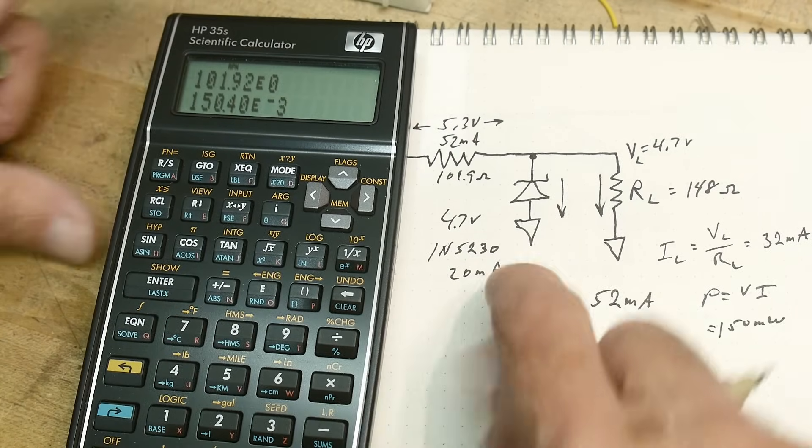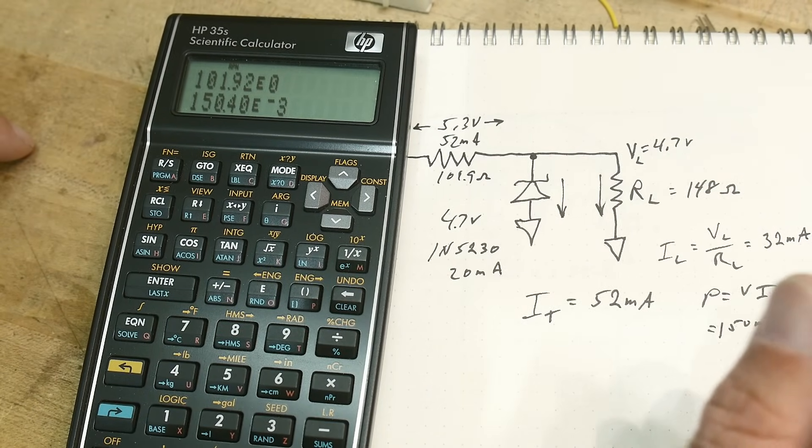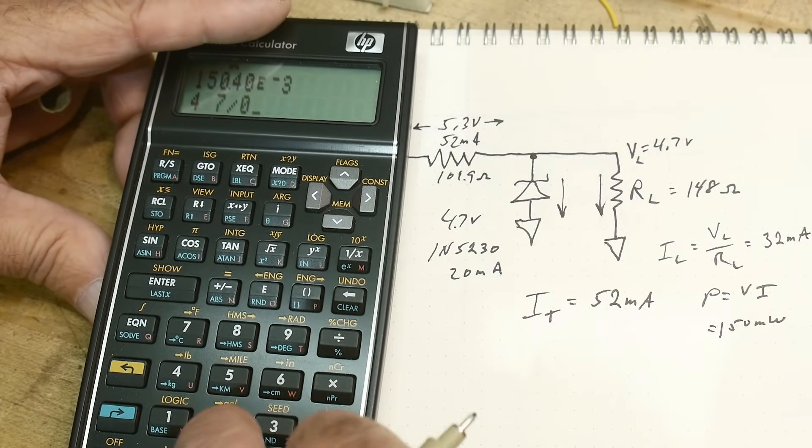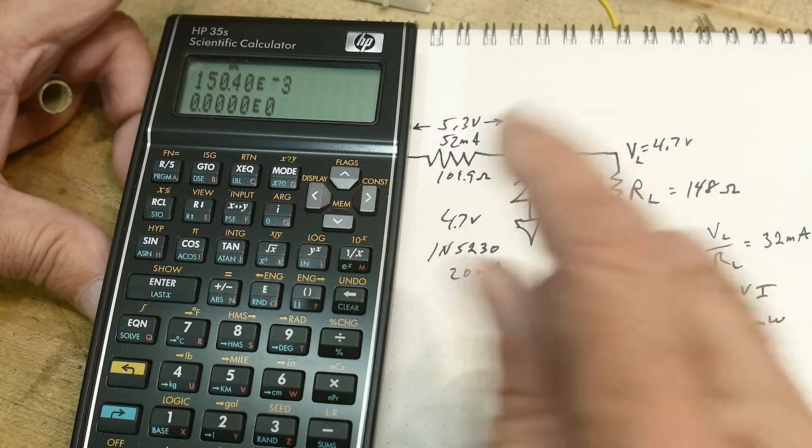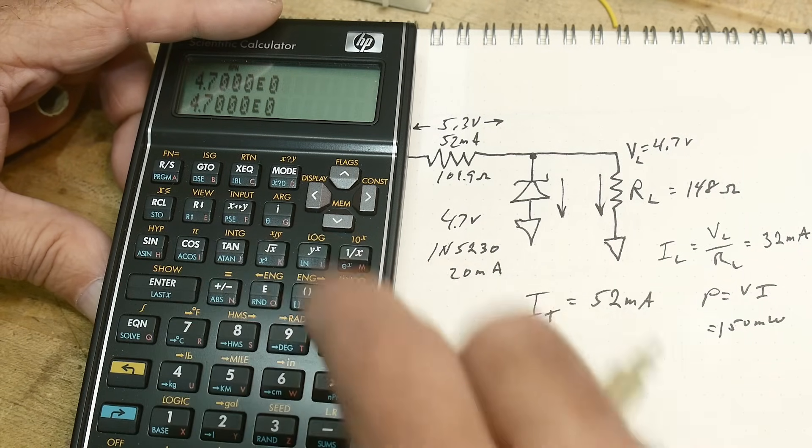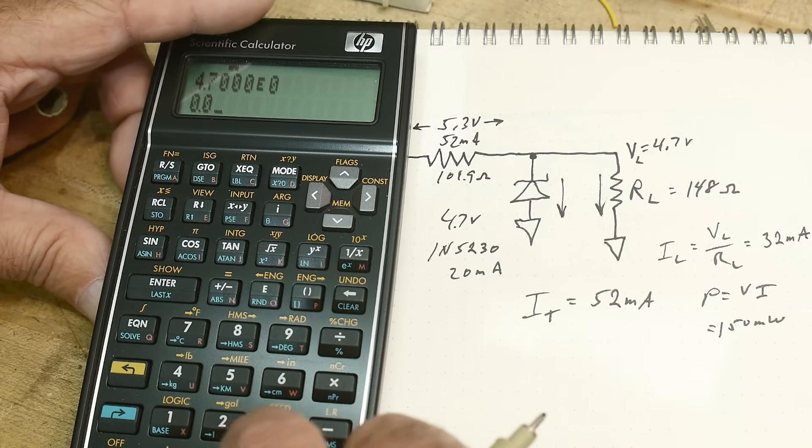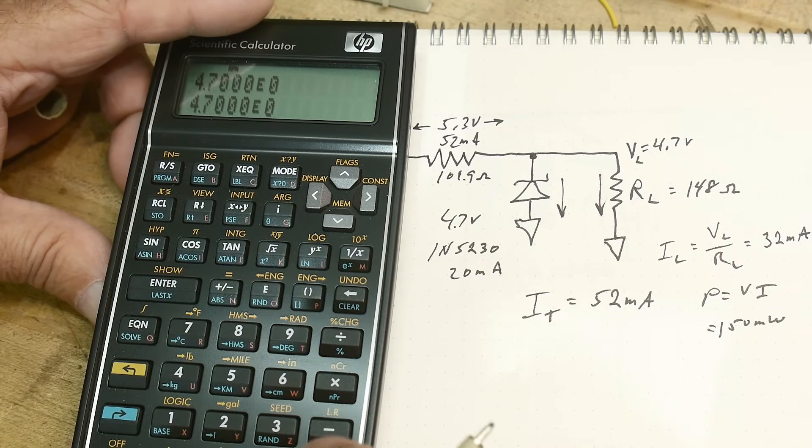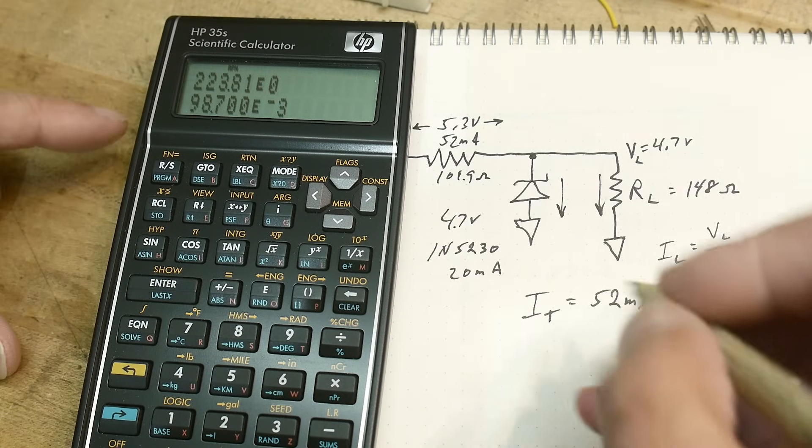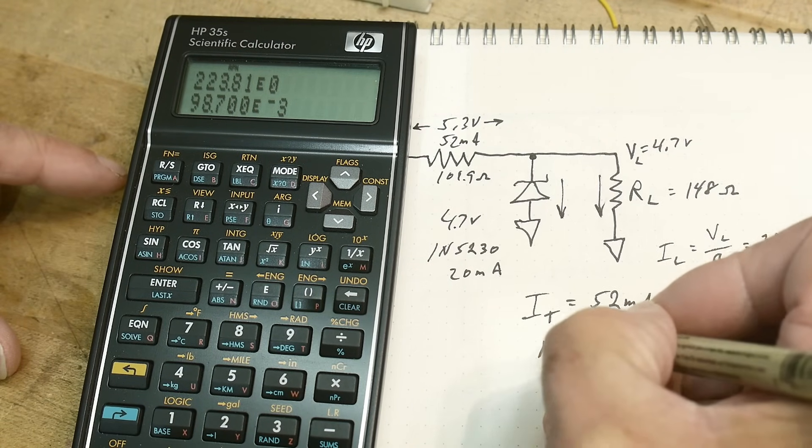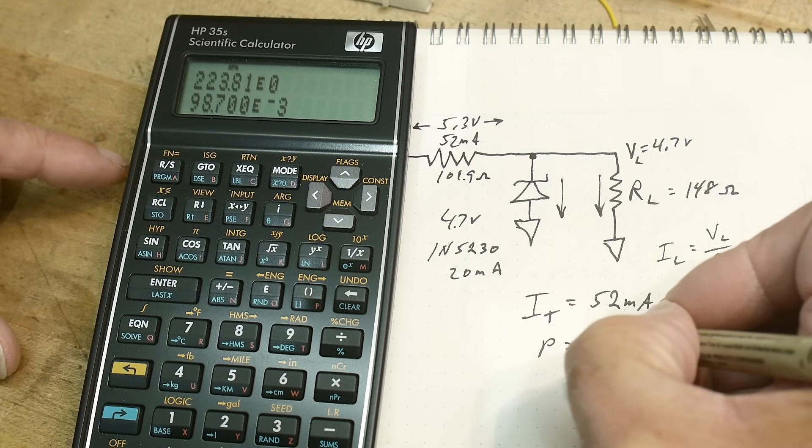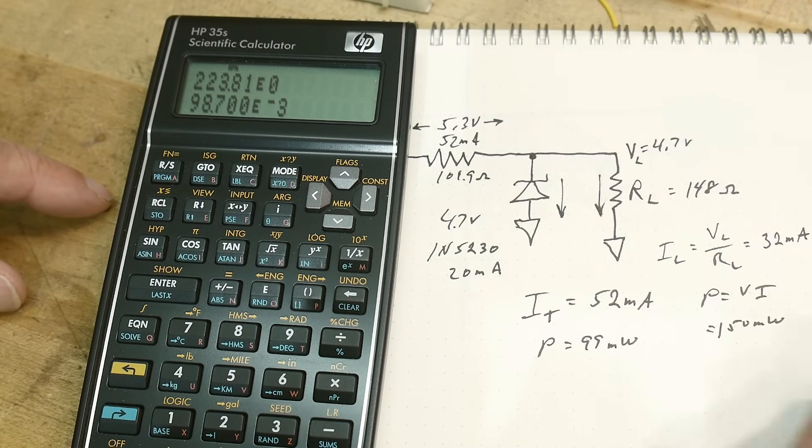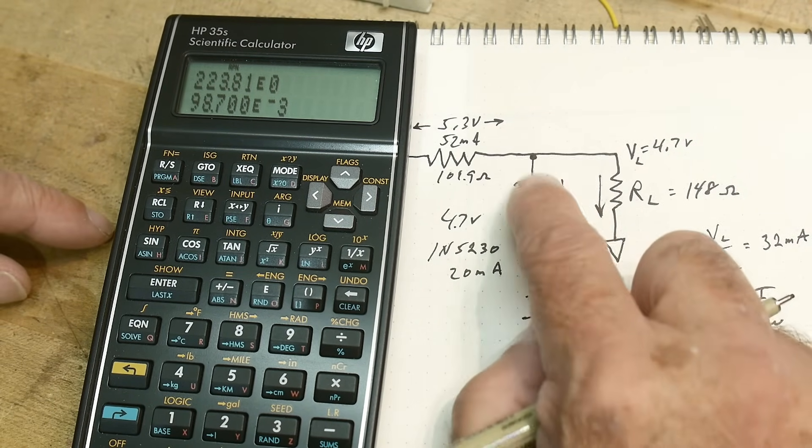And how much power do we have in the zener diode? Well, we have 4.7, and we have 21. We have 4.7, and we have 0.021. We have power over here is 99 milliwatts. So 99 milliwatts. And how many milliwatts is our zener diode good for? 500 milliwatts. So we're okay there. We're below its maximum here.